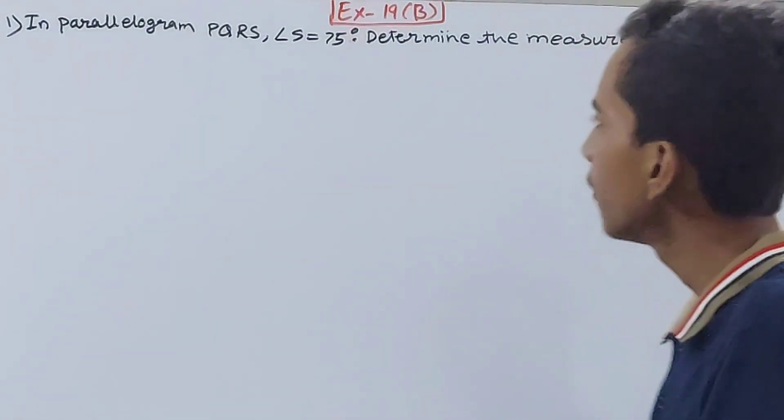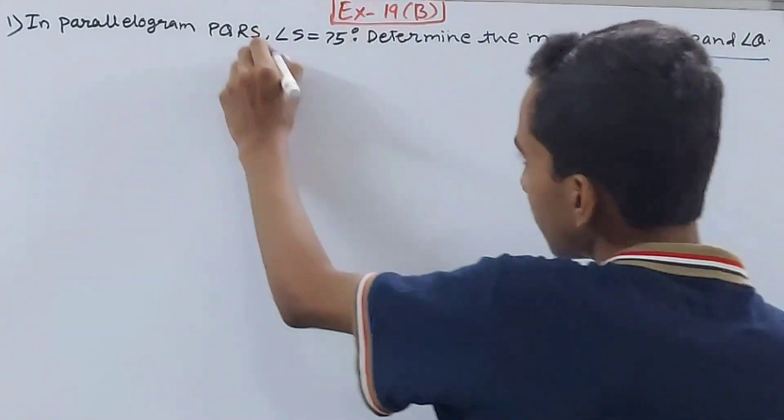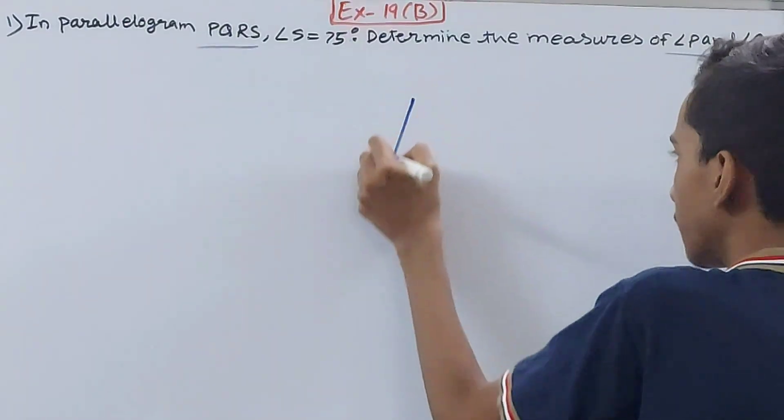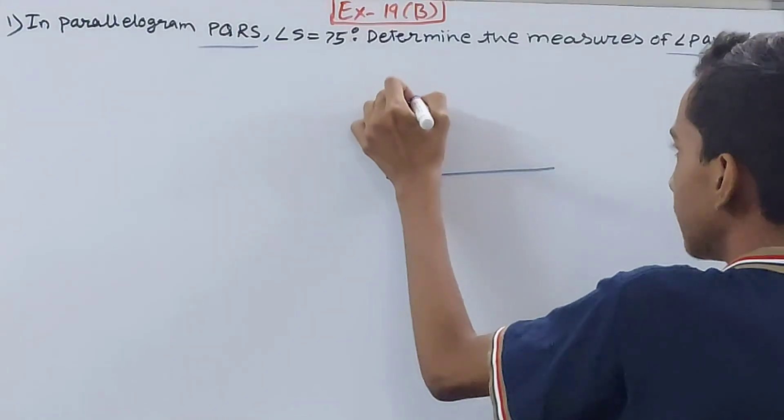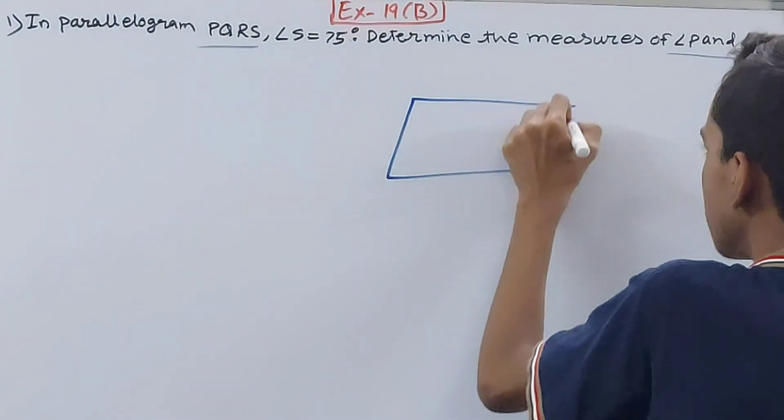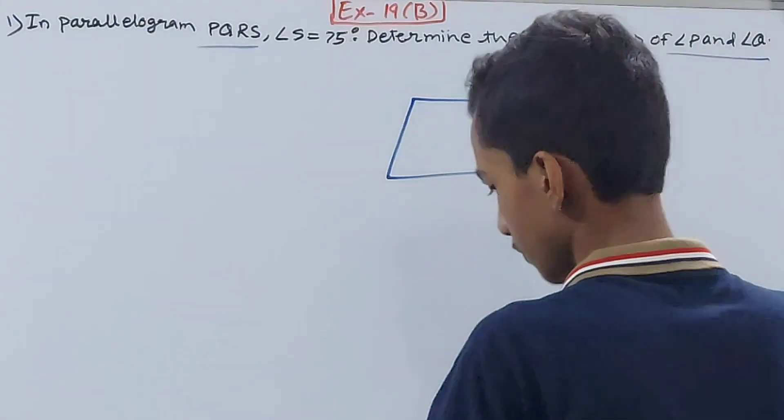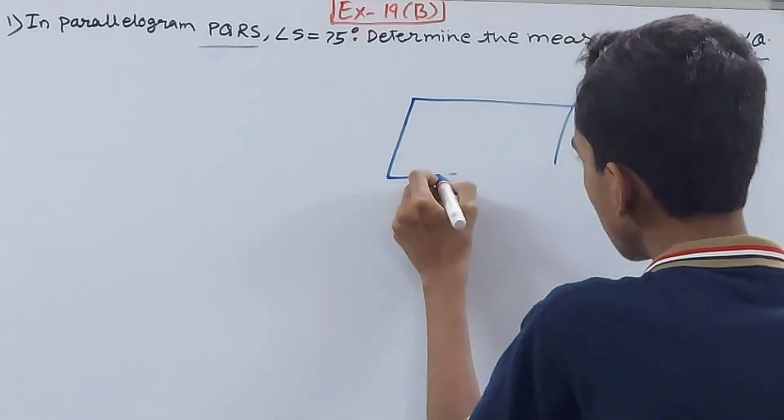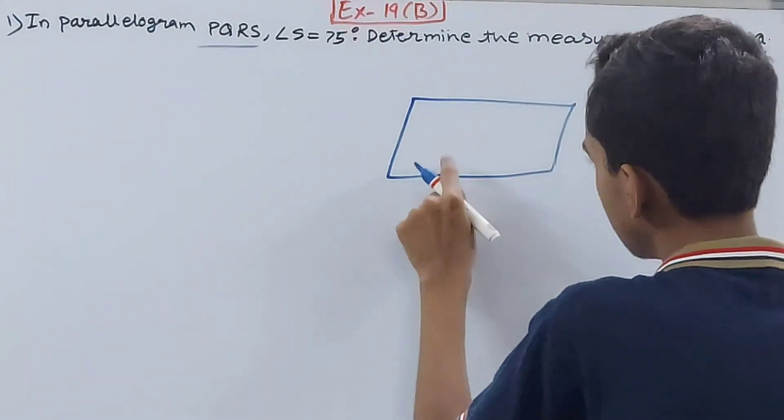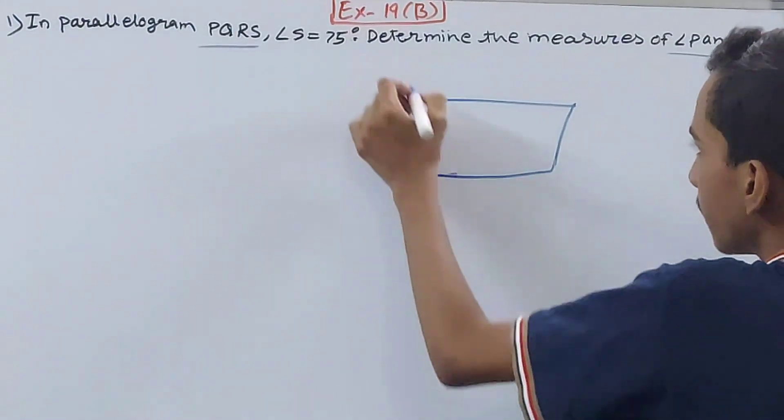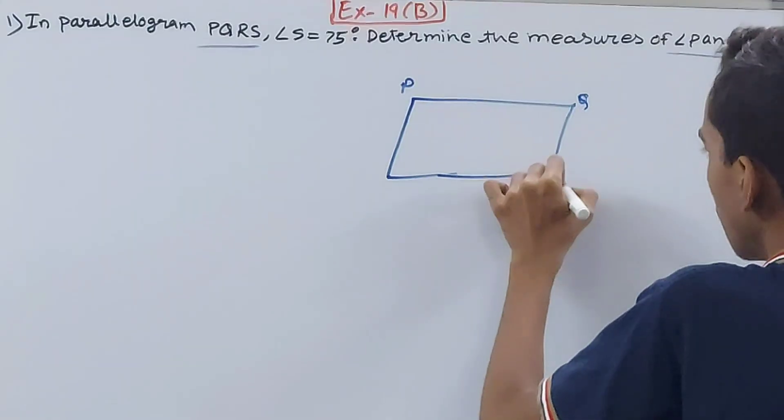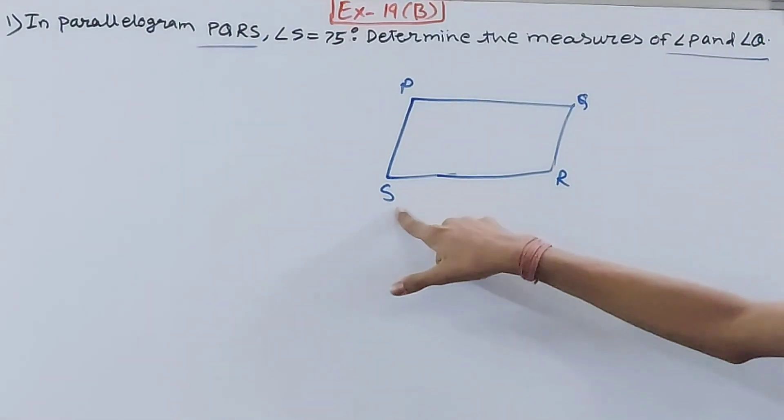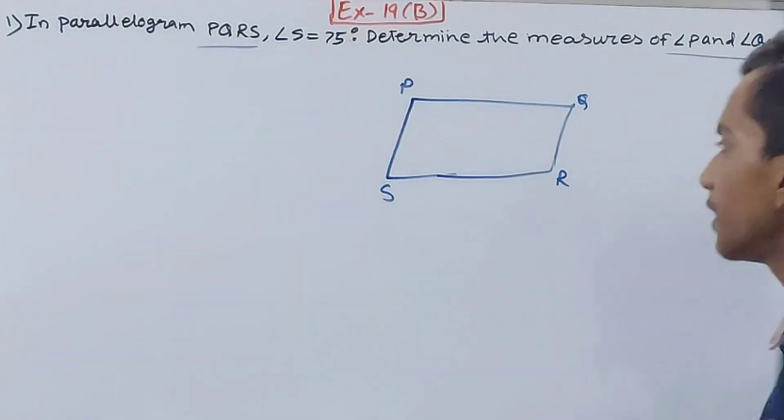First, let's begin by making this parallelogram PQRS, the general shape that we're all aware of. So this is what a parallelogram basically is. Now in this parallelogram I'll give the names P, Q, R, S. Here we have angle S, which is 75 degrees.